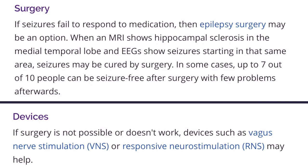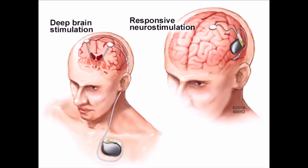Another option involves different devices if surgery isn't possible. For example, if the person's memory or their speech and language are in the same spot where their seizures are occurring, the doctors don't want to remove that part of the brain, because even if they become seizure-free, losing the ability to talk wouldn't be worth the trade-off. So an alternative is to use a device such as vagus nerve stimulation or responsive neurostimulation. With responsive neurostimulation, a surgeon implants electrodes onto the brain, which detect when a seizure is occurring and send a pulse of electrical activity to the seizure site to stop and control it.